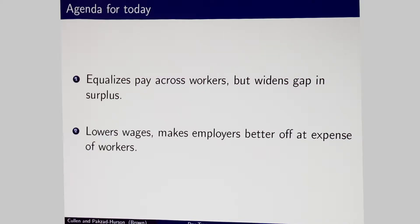I want to talk about two types of results today. One is about how transparency affects fairness. We'll see that transparency equalizes pay across workers, but actually widens the gap in surplus from employment — those who benefit the most from employment will benefit even more relative to those who benefit the least. In terms of fairness between employers and workers, transparency results in lower wages and makes employers better off at the expense of workers.